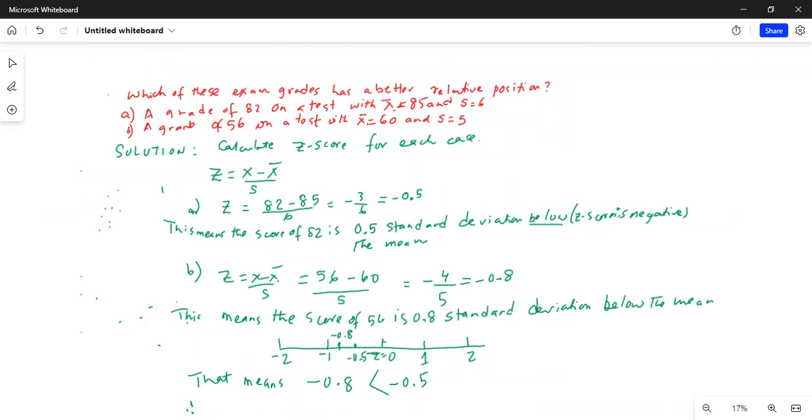Hence, the first score of 82 has a higher z-score.